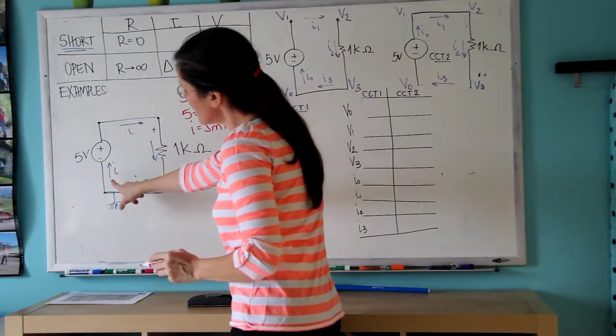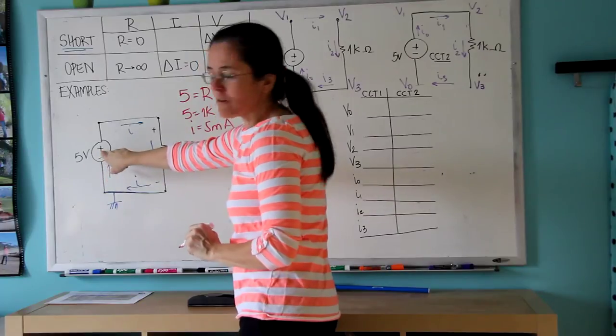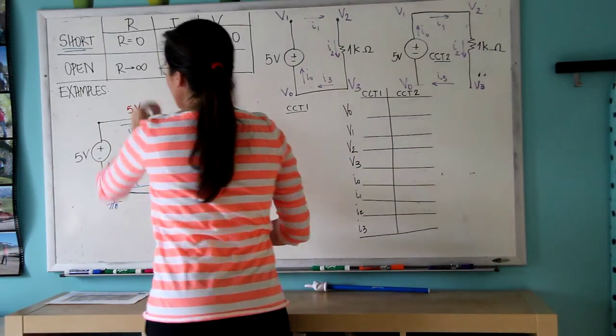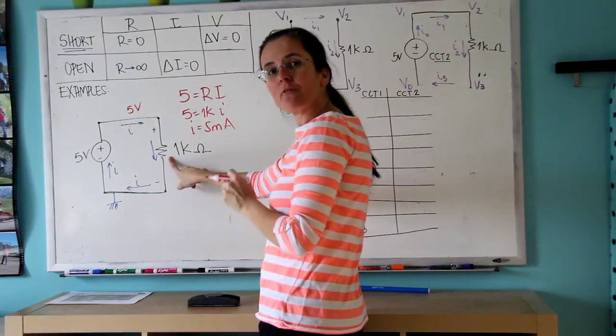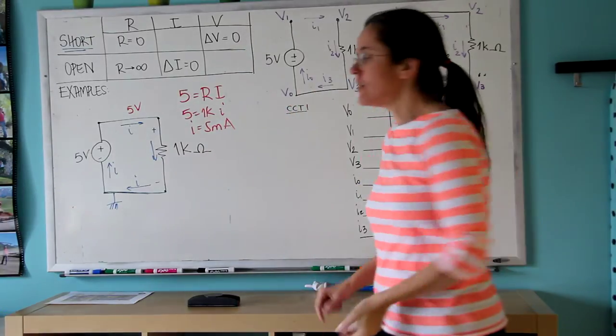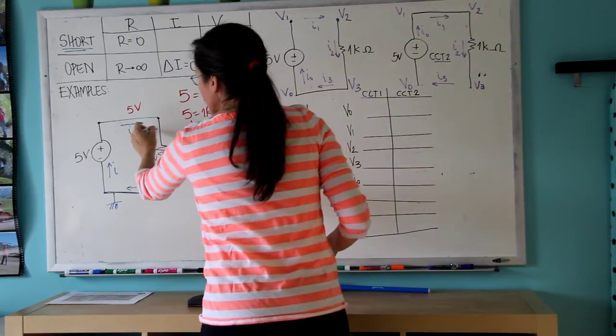Basically, given this five volt power supply here, there are five volts up here and I'm going to indicate the five volt drop across the resistor with an arrow, with a plus here and a minus here.